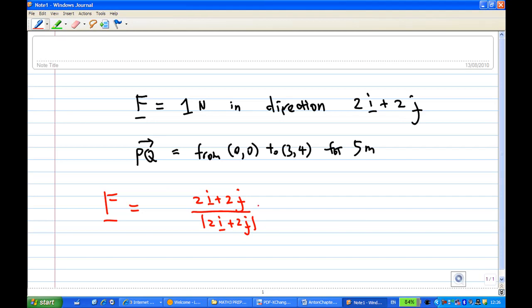Therefore, that is just the force we need now, and the length of 2i plus 2j is square root of 2 squared plus 2 squared. So we get 2i plus 2j over square root of 4 plus 4 is 8. This will be the force.